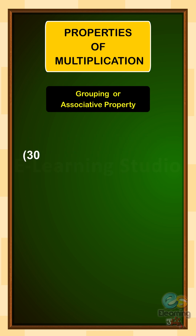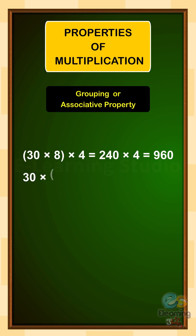Bracket open 30 multiply 8 bracket close multiply 4 is equal to 240 multiply 4, which is equal to 960. Then, 30 multiply bracket open 8 multiply 4 bracket close is equal to 30 multiply 32, which is equal to 960.